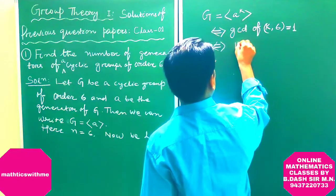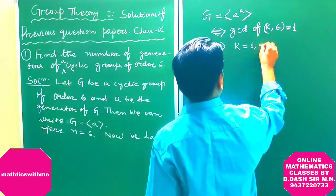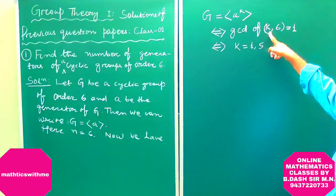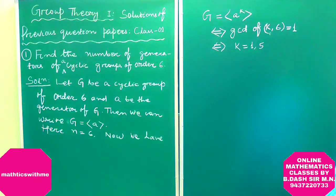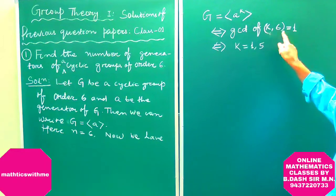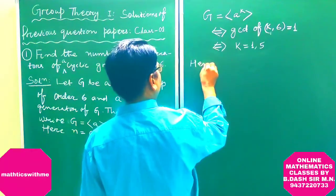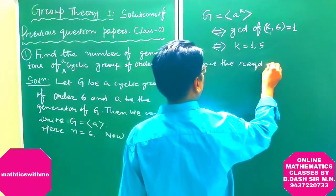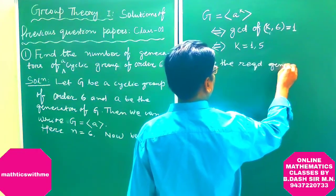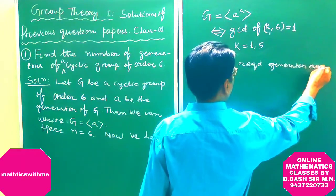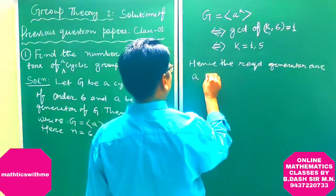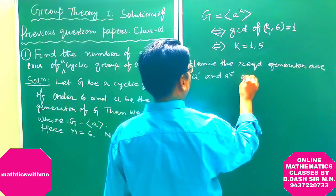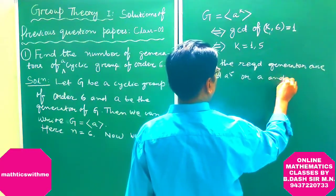This holds if and only if K is equal to 1 or K is equal to 5, since those are the only values for which the greatest common divisor of K and 6 is 1. Hence, the required generators are A to the power 1 and A to the power 5, that is, A and A to the power 5.